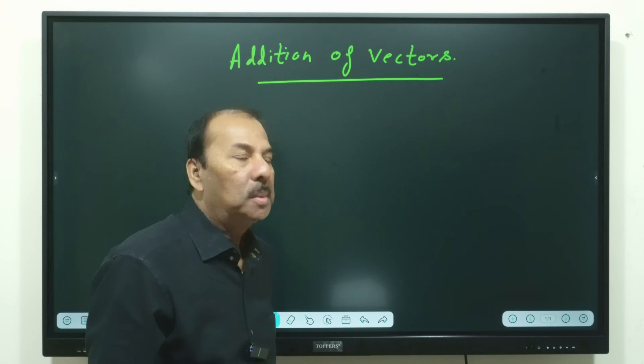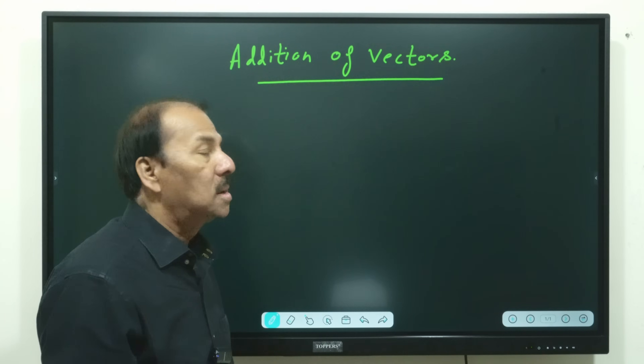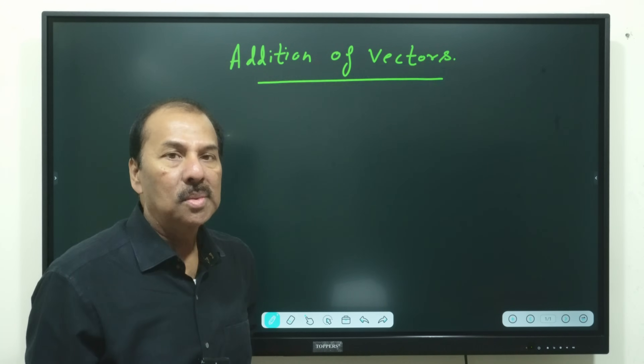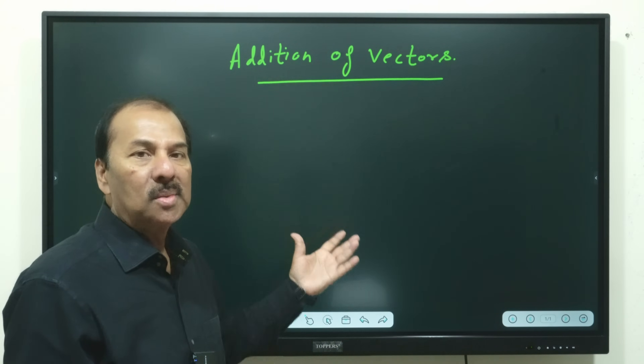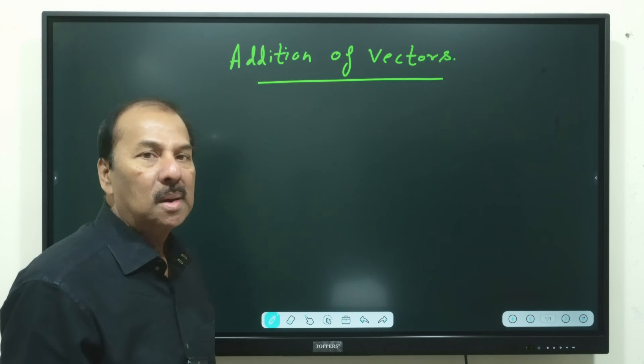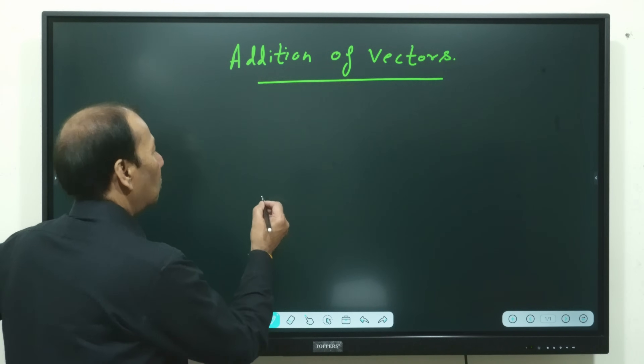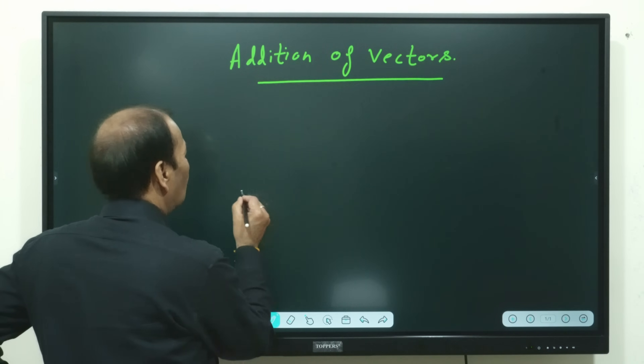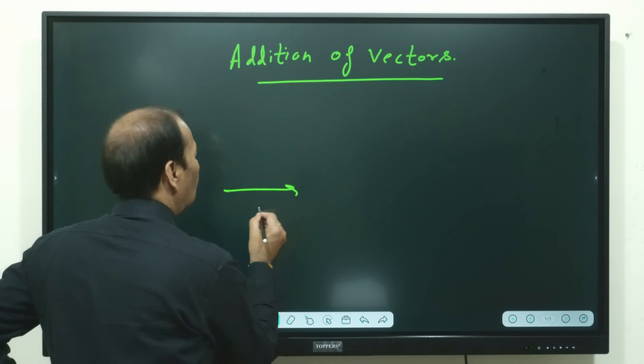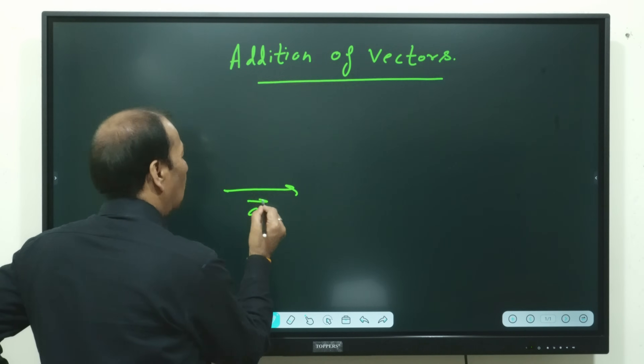Hi everyone. Today we will discuss addition of vectors. Let us see how the vectors are added. Suppose we have two vectors, vector A and vector B.